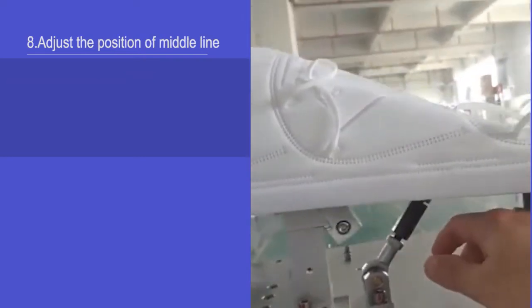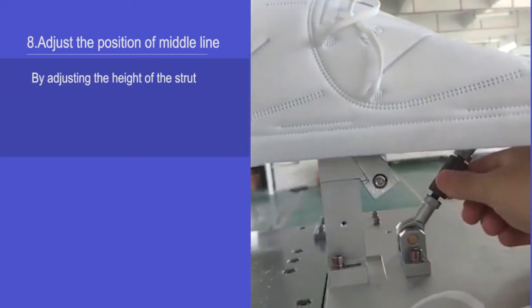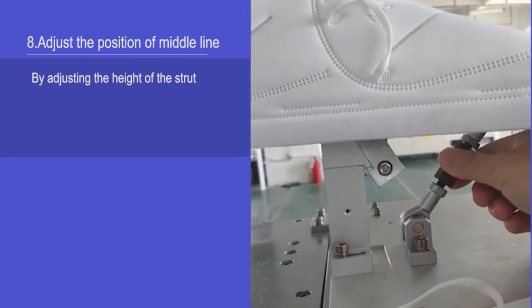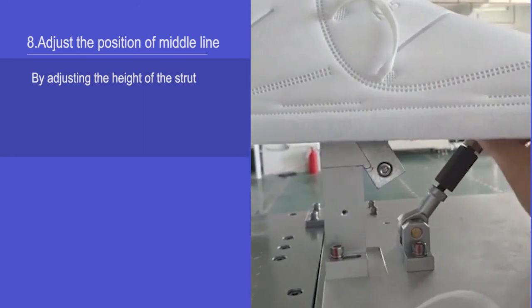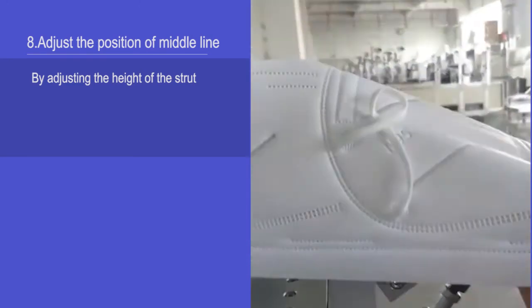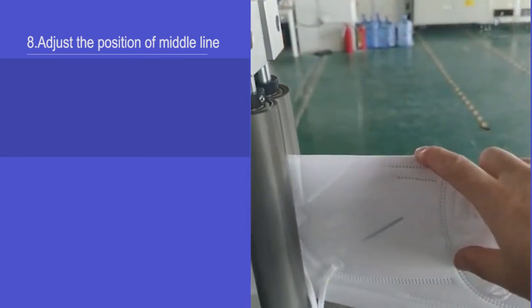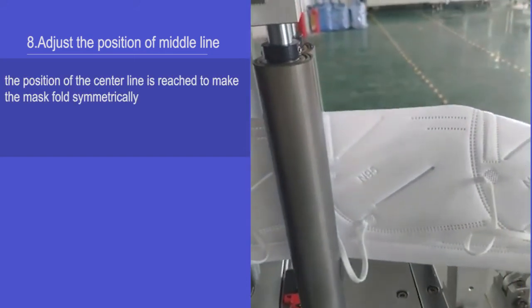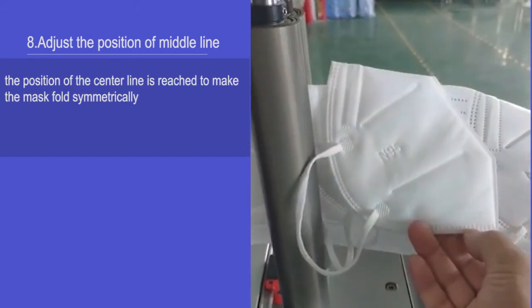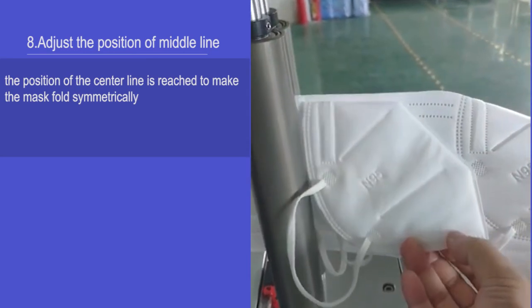Adjust the position of the middle line by adjusting the height of the strut. The position of the center line is reached to make the mask fold symmetrically.